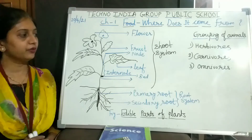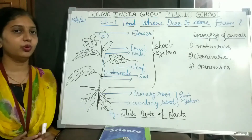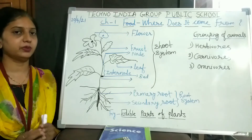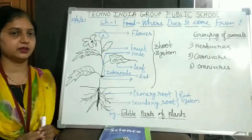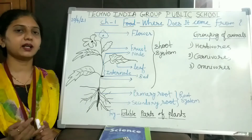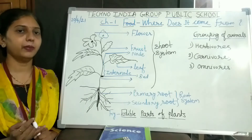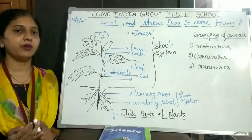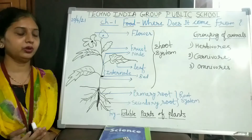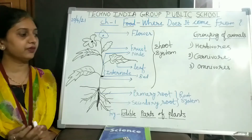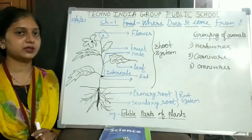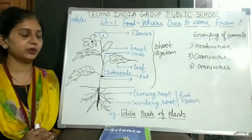Before that, we have to know what are the different parts of the plants. There are different parts of the plants: leaves, bud, flower, stem, and root. These are the different parts of the plants.